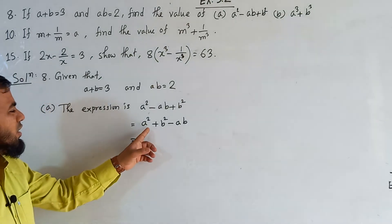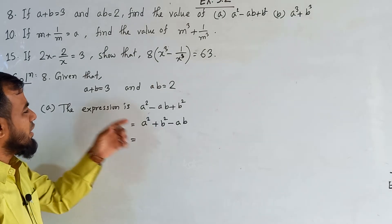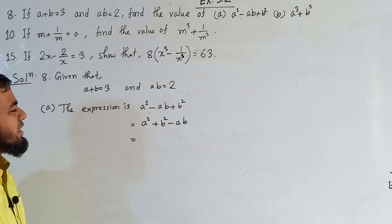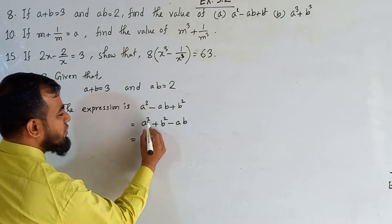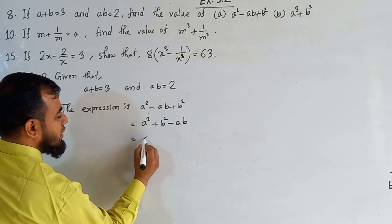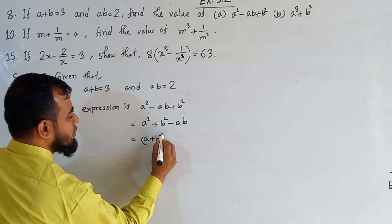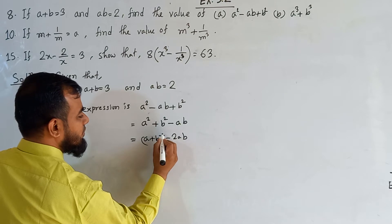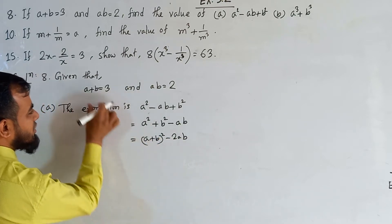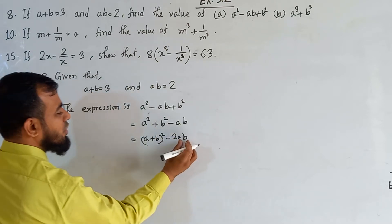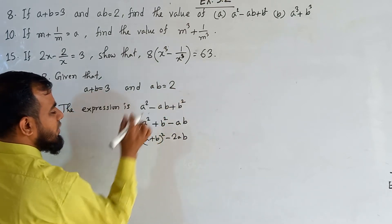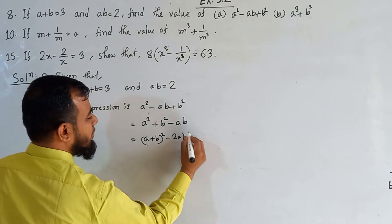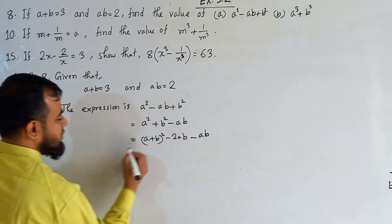That is why I am going to write down a corollary. Corollary number 1: A squared plus B squared equals A plus B whole squared minus twice AB. Because we know the value of A plus B and we also know the value of AB. That is why I am creating this corollary here. And minus AB remains unchanged.